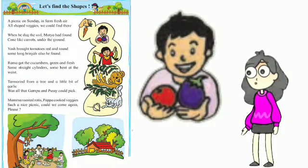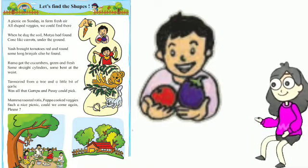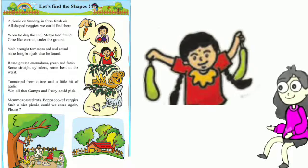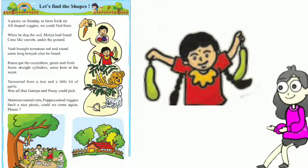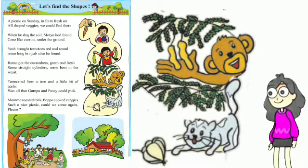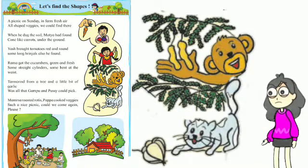Some long brinjals also he found. Yashne and leave wangi, ni tomato lal ambert, tomato chan gold, pan wangi zara lambert. Rama got the cucumbers, green and fresh, some straight, some bent. Tamarind from a tree and a little bit of garlic was all that Gampu and Pushy could pick.